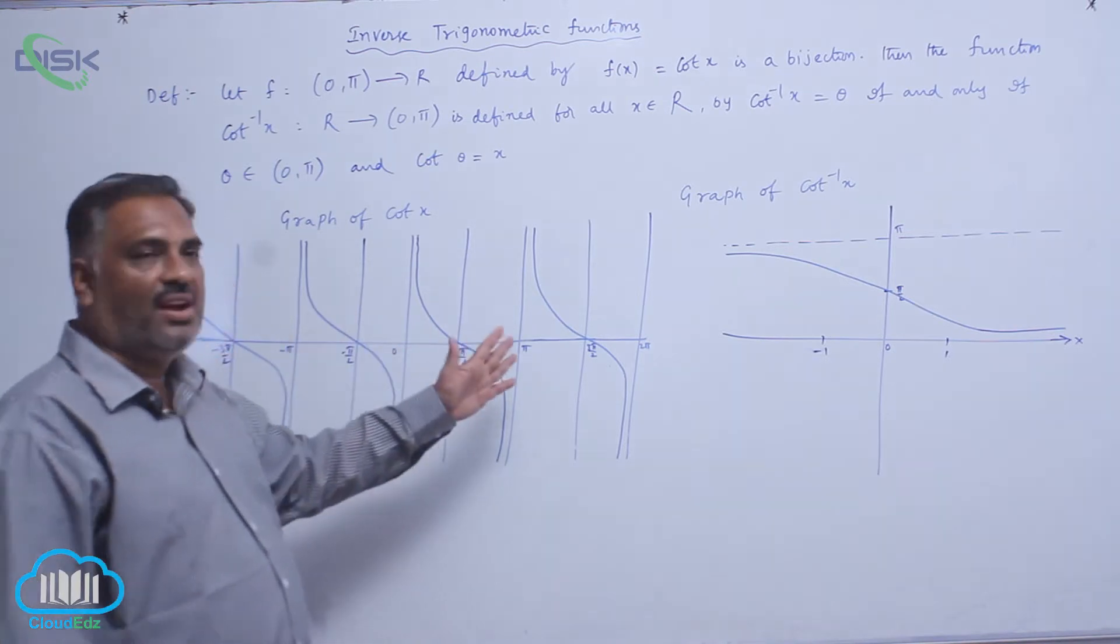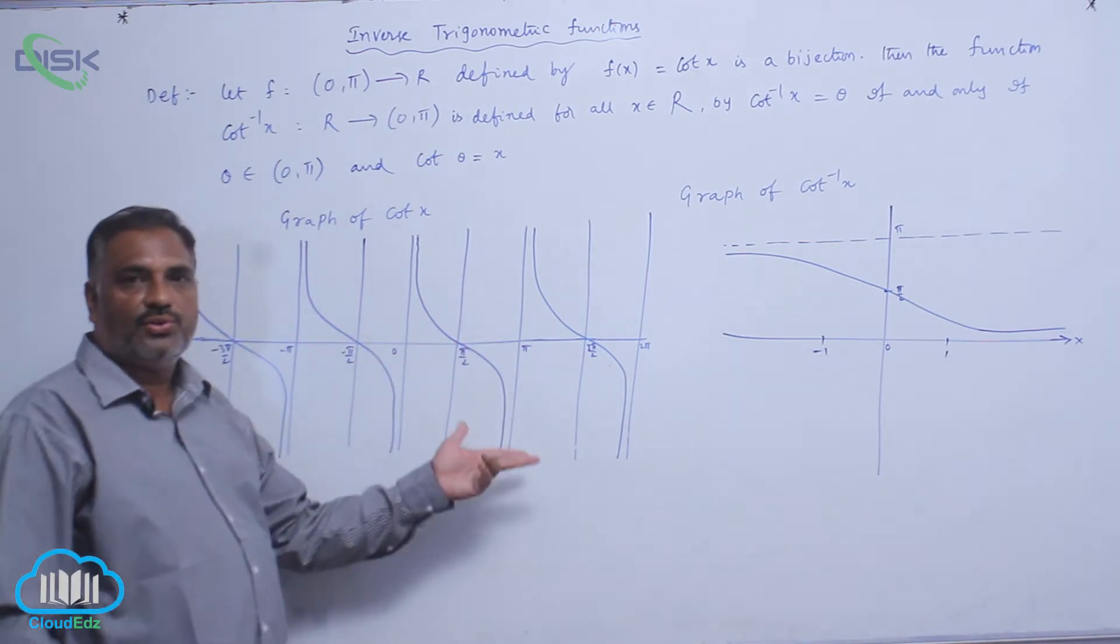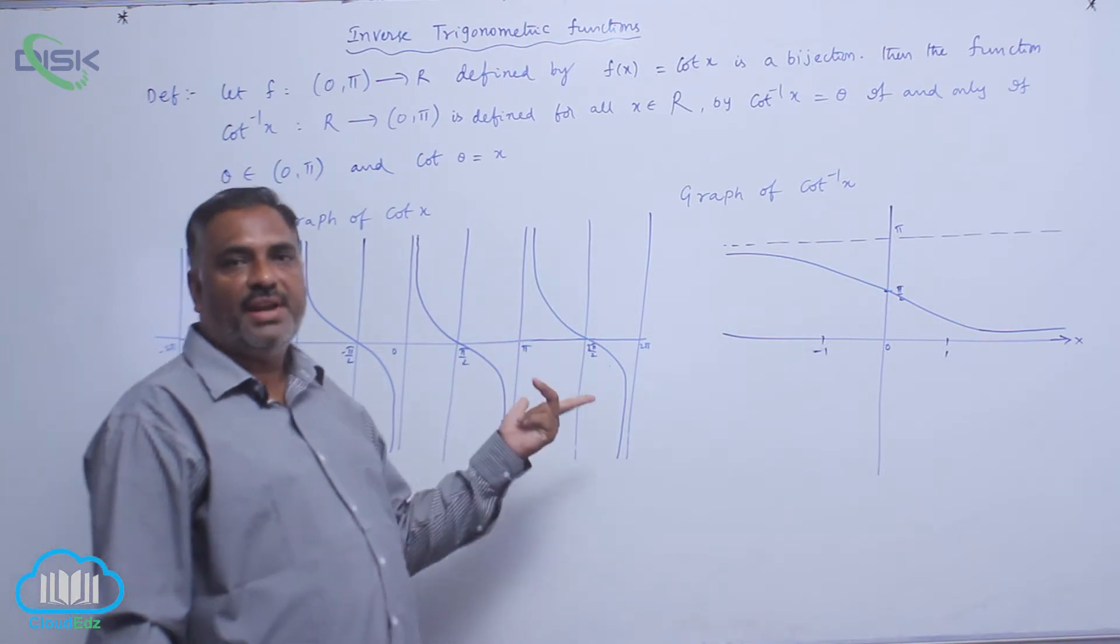It is a discontinuous graph at multiples of π. Of course, it is a periodic function with a period of π radians.